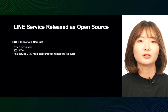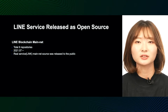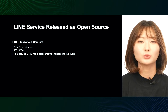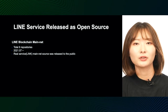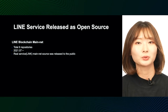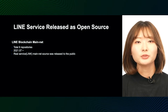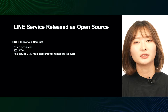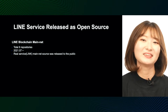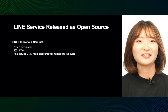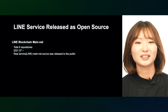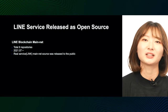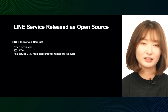In July, LINE's blockchain service, Link Mainnet, was released as an open source. So far, a total of eight repositories have been released and are being developed as open source. Operating as an actual service, there were a lot of trial and errors, which made it a very memorable project. I hope that the service will continue to do well in the future and become a popular project as an open source.